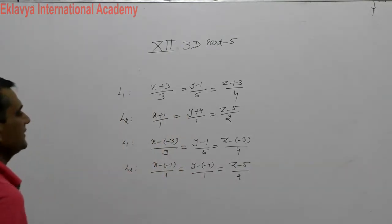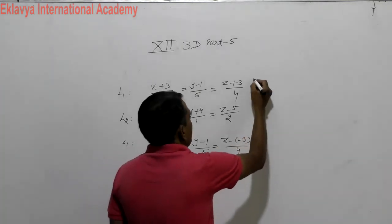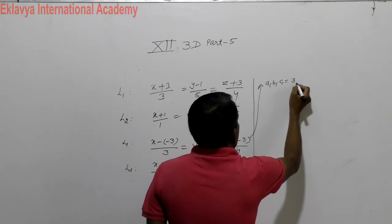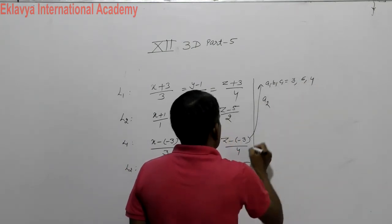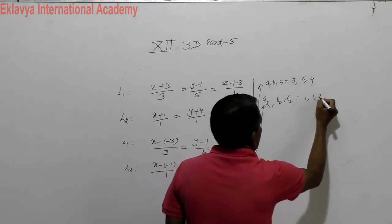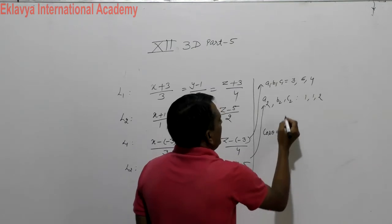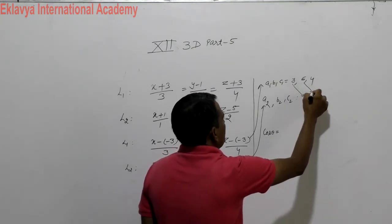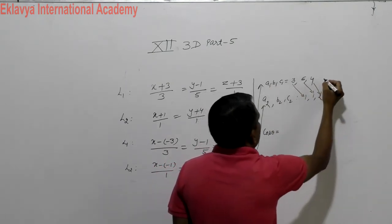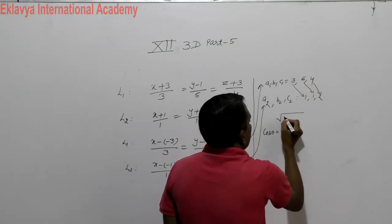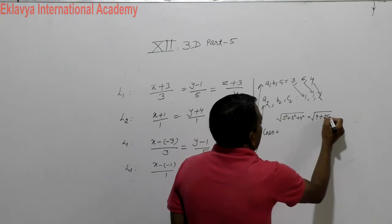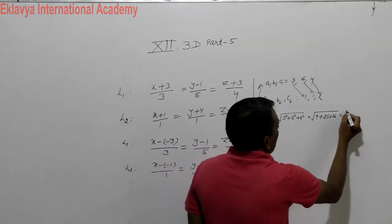So these are the two lines in their standard form. From Line 1, we get a1, b1, c1 which are 3, 5, 4. From Line 2, we get a2, b2, c2 which are 1, 1, 2. Now the magnitude of the direction vector of Line 1 is root of 9 plus 25 plus 16, which equals root of 50, or simplified, 5 root 2.